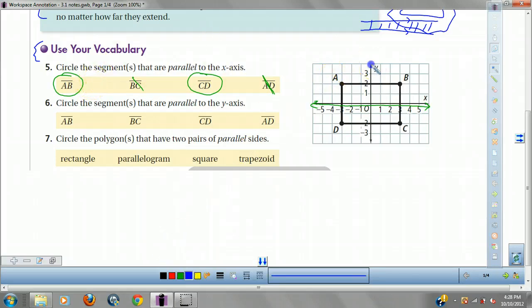Now let's see which ones are parallel to the y-axis. Well, AB isn't. You're going to see that these are kind of the opposite. BC is. CD isn't. AD is.